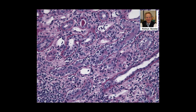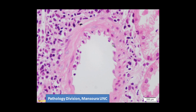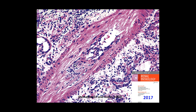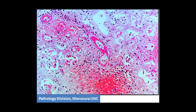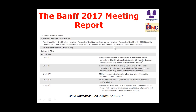For vasculitis (V scoring): V1 is inflammation of the intima without narrowing of the vessel lumen. V2 means the inflammation encroaches on 25% or more of the vessel lumen. V3 is transmural arteritis where the whole vessel wall is invaded by inflammatory cells, and sometimes fibrinoid necrosis is found.